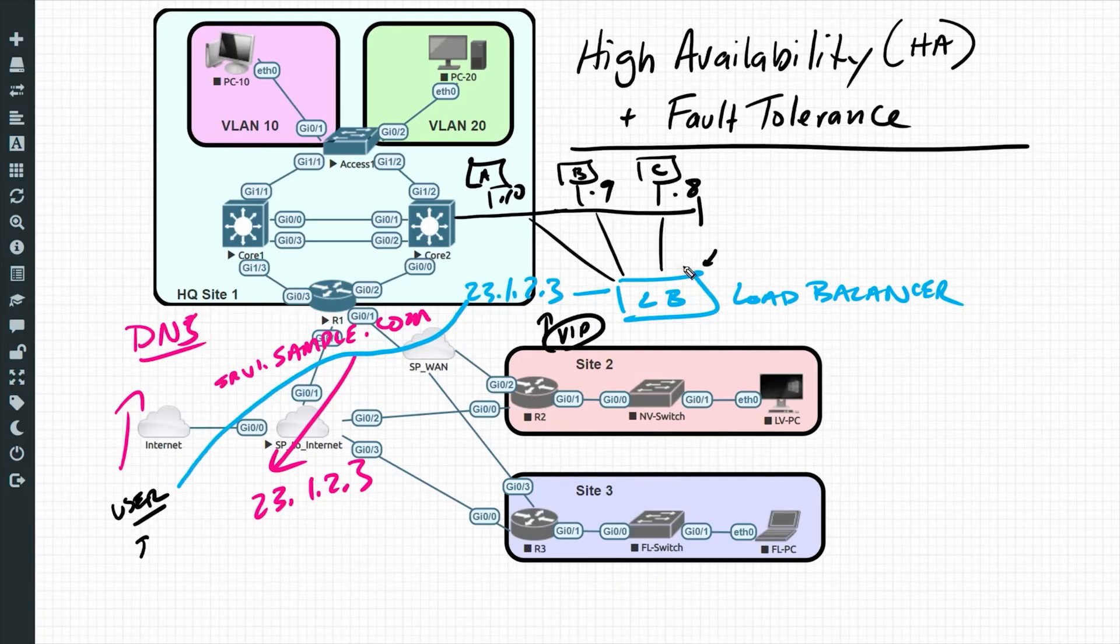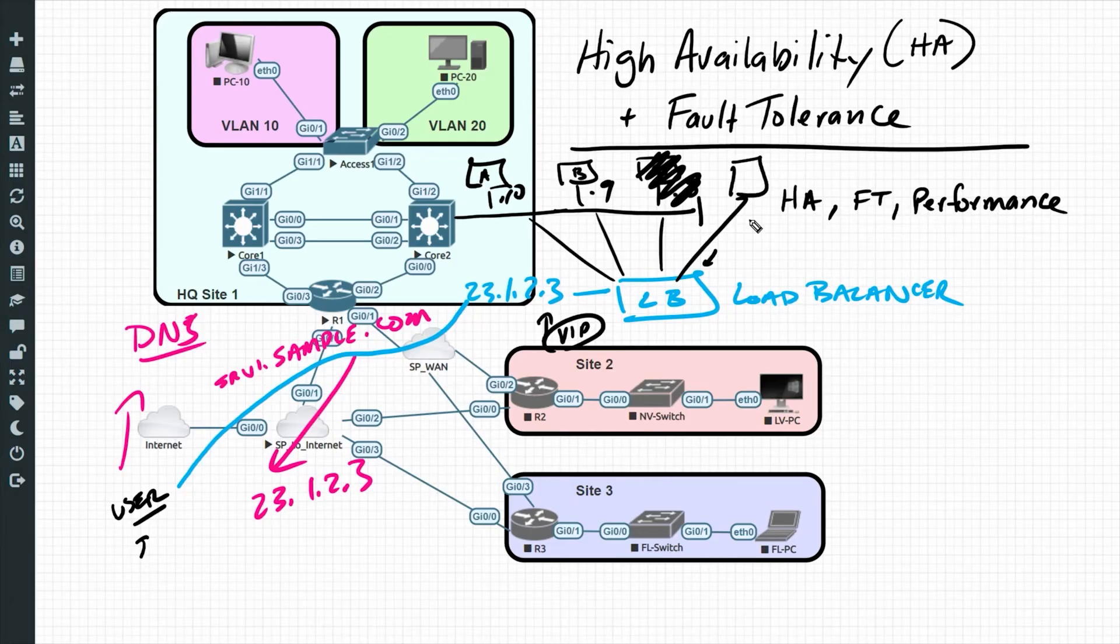The load balancer can evenly distribute the number of requests across those servers. And if a single server fails, the load balancer, when new requests come in, because it's tracking those servers on the back end, can forward the new requests to the existing servers. So a load balancer is part of a solution for implementing high availability and fault tolerance, and also better performance as well. That's because we don't have just one server, we have multiple servers. And we could spin up another virtual server if we needed to, if the load demanded it.